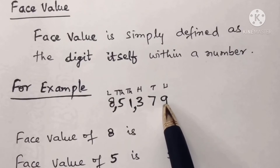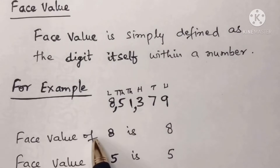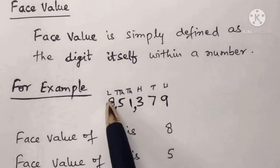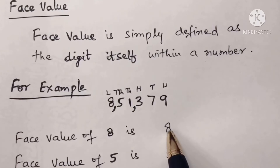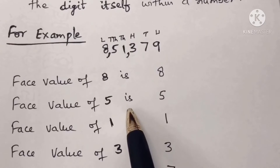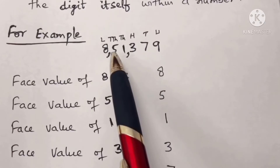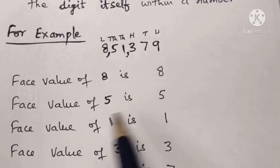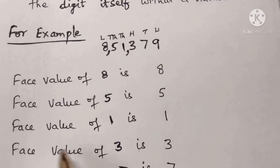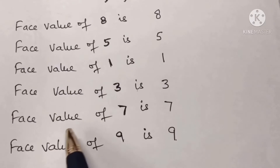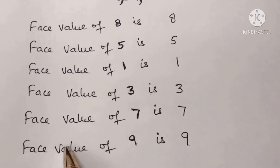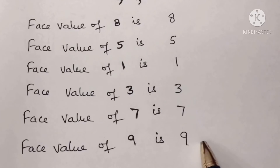For example, if the number is eight lakh fifty one thousand three hundred and seventy nine: the face value of eight is eight, whatever place it has. The face value of five is five, even though it is at the ten thousand place. The face value of one is one, three is three, seven is seven, and nine is nine.